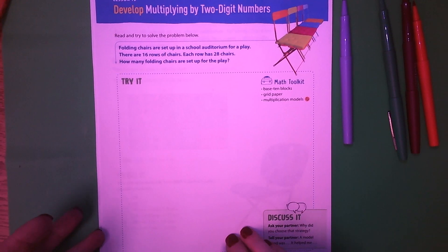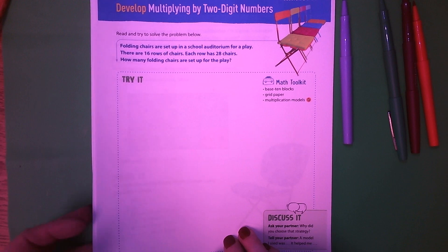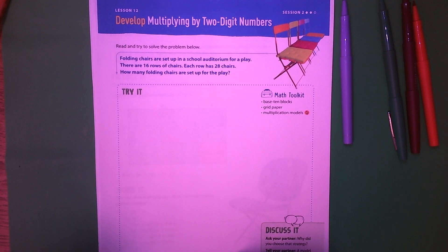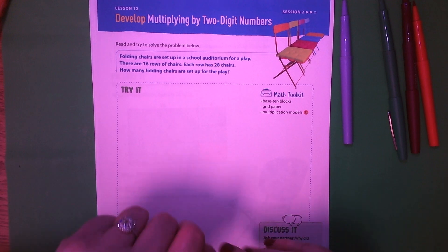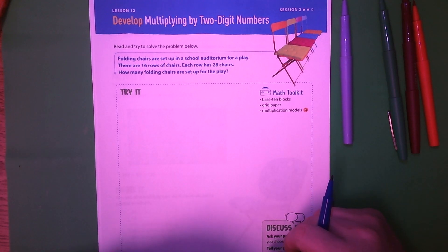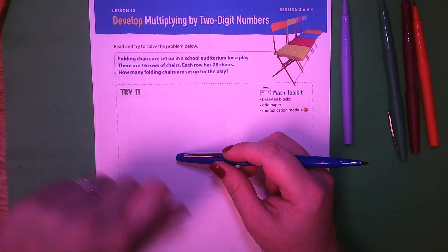Alright, this is lesson 12, session 2. We are still multiplying by two-digit numbers. So let's take a look at our first problem here. It's on page 257. Students, you should have a pencil in your math book, and if I write it, you should be writing it.